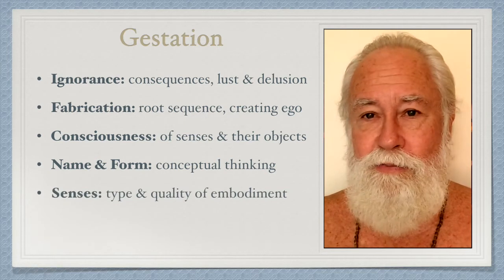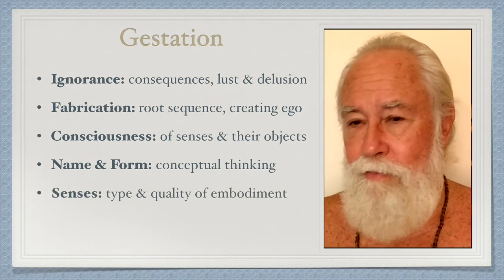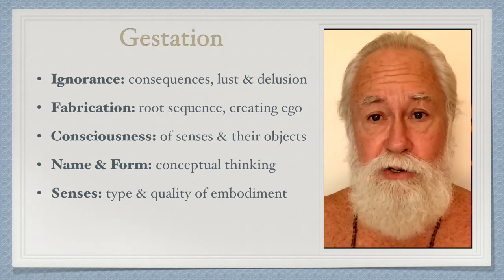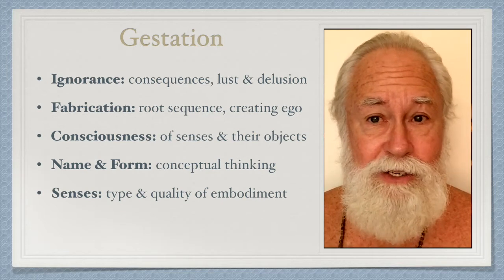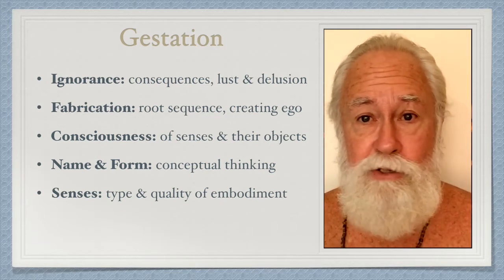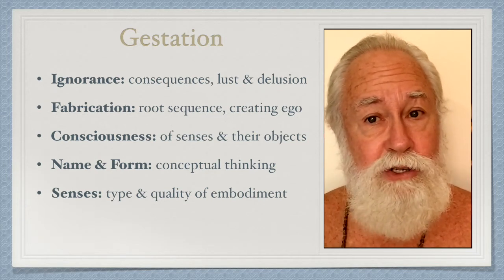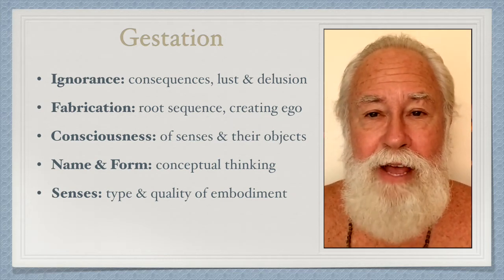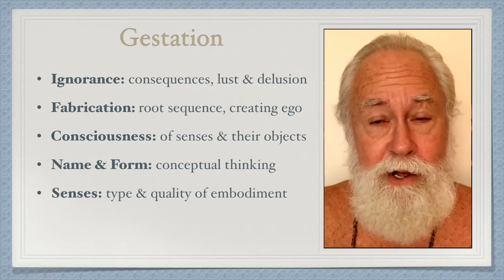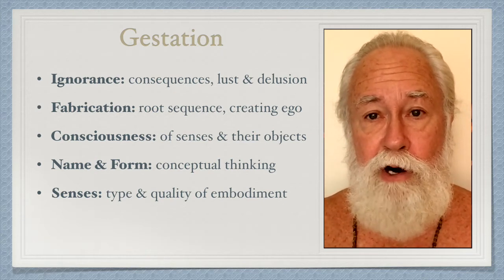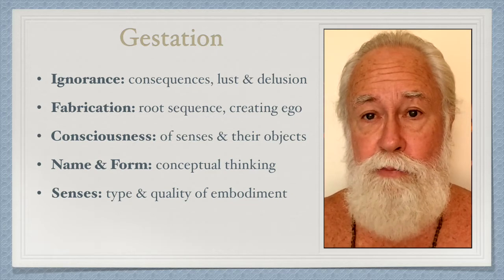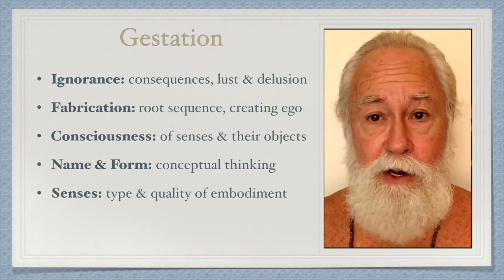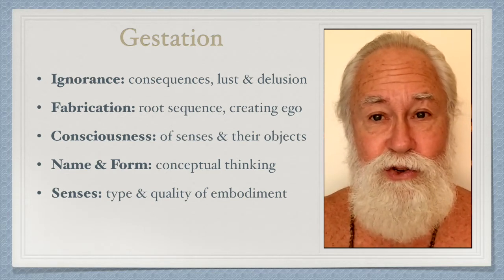Then the senses come into action, and the senses determine the type and quality of our embodiment — just as a human body has a certain type of senses, and a dog body has different senses, with much more sensitive smell, hearing, and vision in certain frequencies. This basically determines the experience of our life: whether we enjoy or suffer, whether we are intelligent or not, lustful or pure. This is all determined by the type and quality of senses we create using the previous stages.